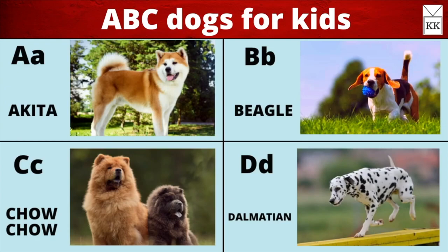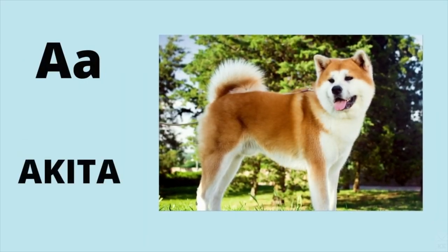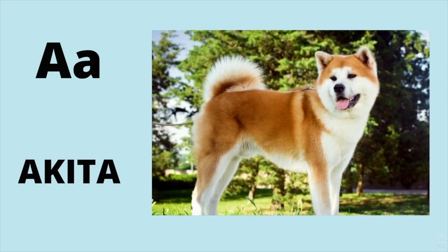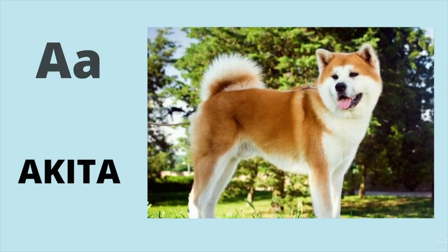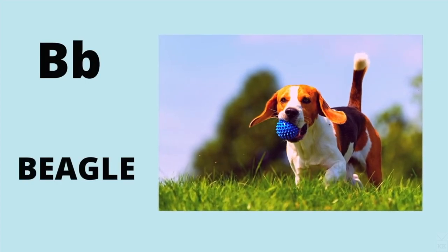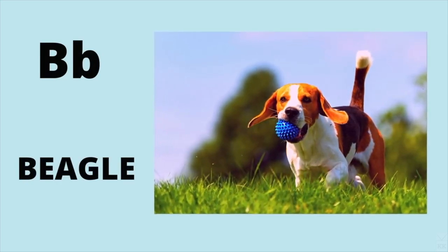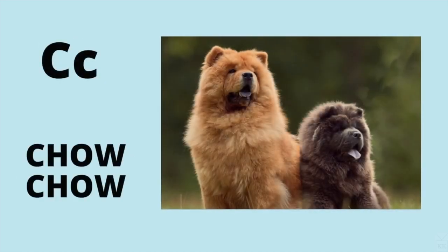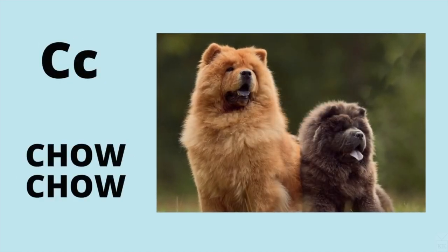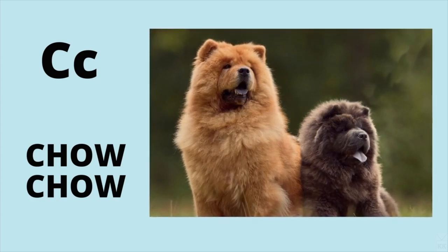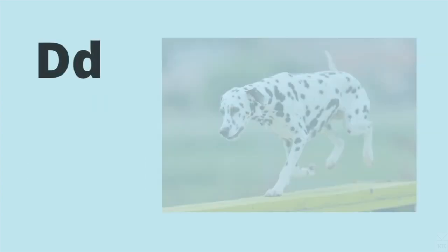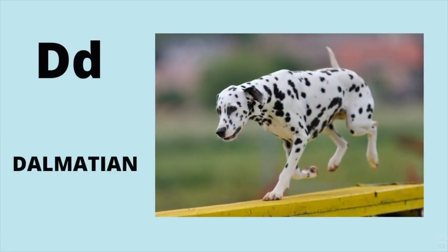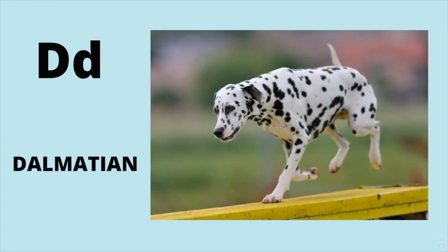ABC Dogs for Kids. A is for Akita. A, Akita. B is for Beagle. B, beagle. C is for Chow Chow. Ch, chow chow. D is for Dalmatian. D, Dalmatian.